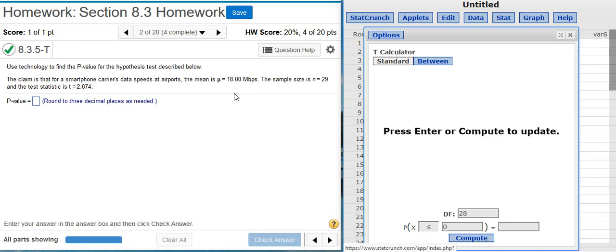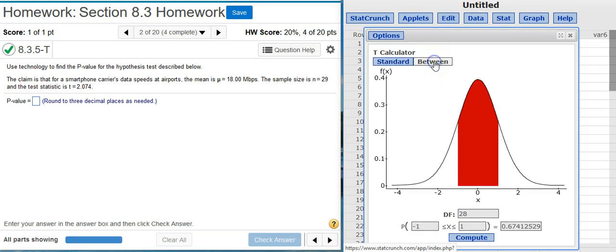Not equal to means we're going to have a two-tailed test. So I'm going to come up here in my distribution calculator and select the between option, because my p-value is actually split between the left and right tail of my distribution.